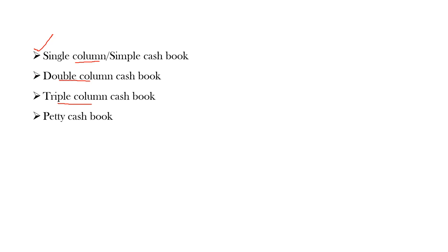In today's business organizations, businessmen usually prefer to have their transactions through bank. Whether they are receiving money or paying money, they prefer to do it through bank accounts. So in such cases, there will be a lot of bank transactions, and they will be maintaining a double column cash book. Under a double column cash book, there will be two amount columns — one for the cash column and the other for the bank column.